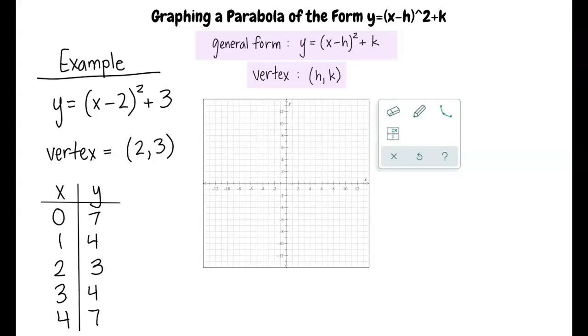The first point is 0, 7. Using the pencil icon, I will find 0 on the x-axis and 7 on the y-axis and plot the point. Next, let's plot 1, 4, and 2, 3.